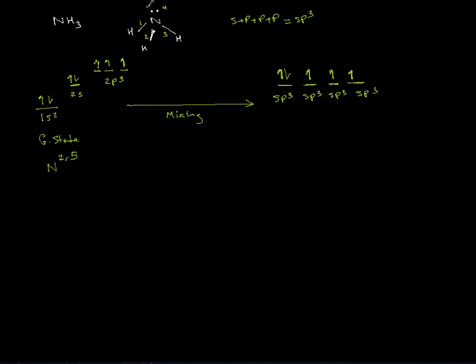So the first one, the lone pair here, is actually this orbital. Then other hydrogens will put one electron into each of the newly formed mixed orbitals. So that's the hybridization of nitrogen.